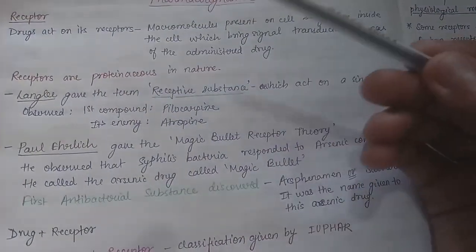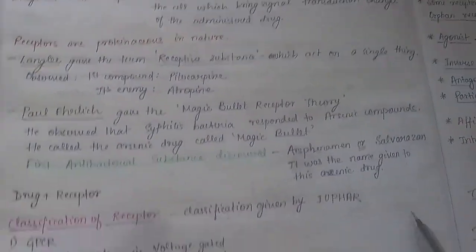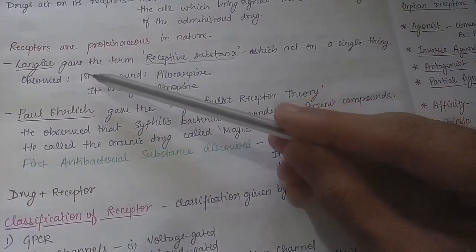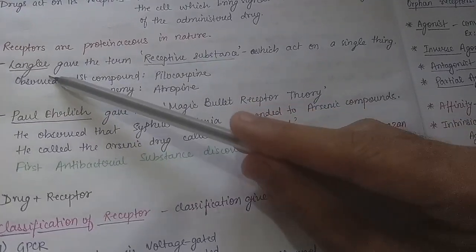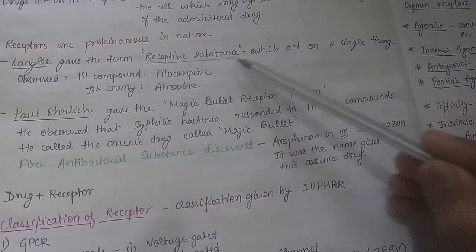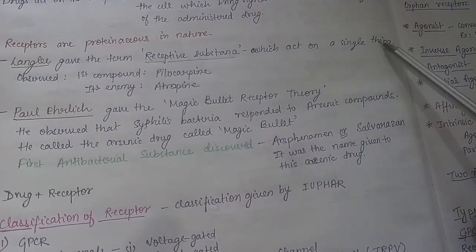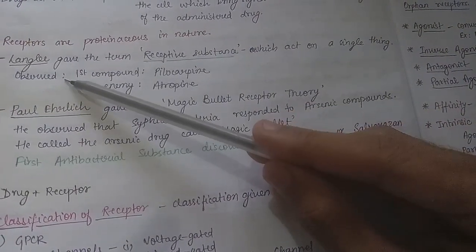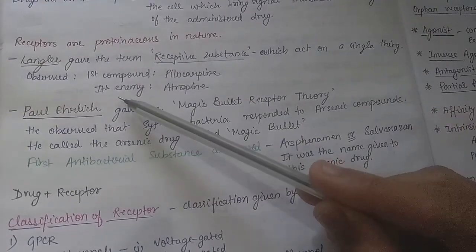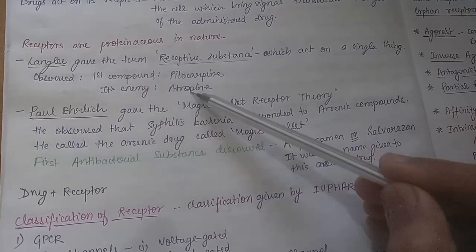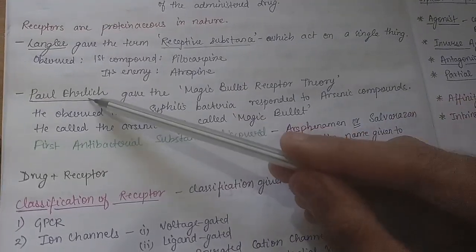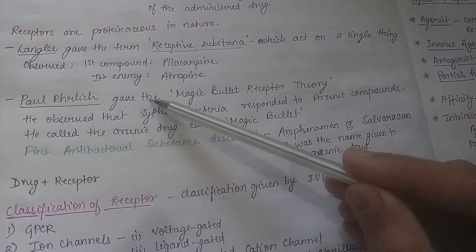Drug acts on its receptors. Receptors are mostly proteinaceous in nature. Some historical points: Langley gave the term 'receptive substances' - a substance which acts on a single thing. He first observed the compound pilocarpine, and its enemy was atropine, which antagonizes its function.